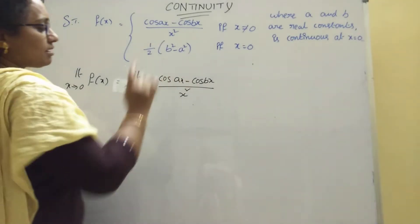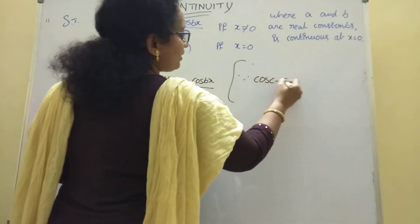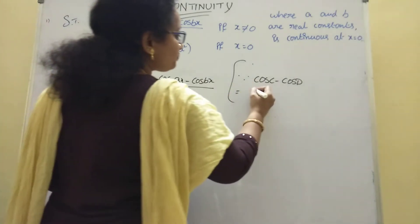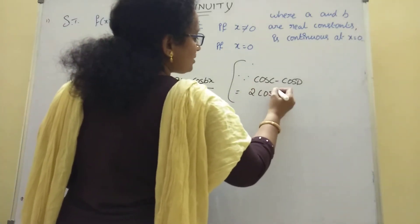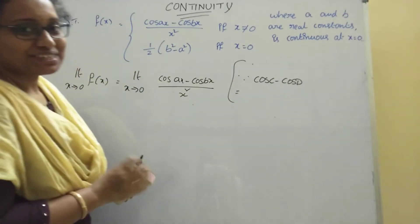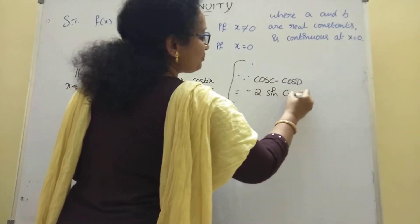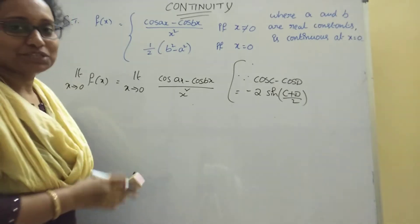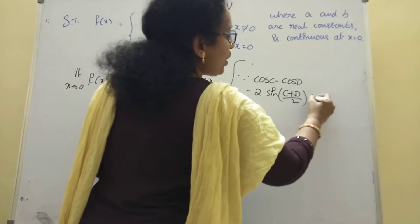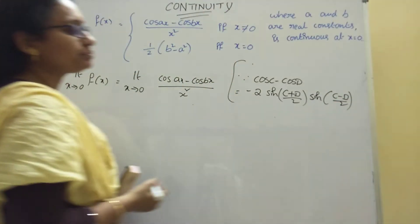Recall the formula: cos C - cos D = -2 sin((C+D)/2) · sin((C-D)/2). So cos C - cos D equals minus 2 sin((C+D)/2) times sin((C-D)/2). That is the formula.